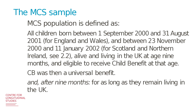The MCS population is defined as all children born between the 1st of September 2000 and 31st of August 2001 in England and Wales, and between 23rd November 2001 and January 2002 for Scotland and Northern Ireland. All children were alive and living in the UK at the age of nine months and were eligible to receive child benefits. Child benefits at the time was a universal benefit, and the child benefit records were used to identify children born in this specific period who were eligible to participate in MCS.